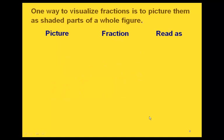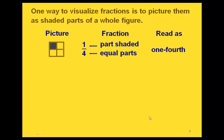One way we can visualize fractions is to picture them as shaded parts of a figure. Here we have a box with four different squares, and only one of them is shaded. The 1, as the numerator of our fraction, represents the number of parts that are shaded. And the 4 represents how many equal parts there are altogether in our picture.